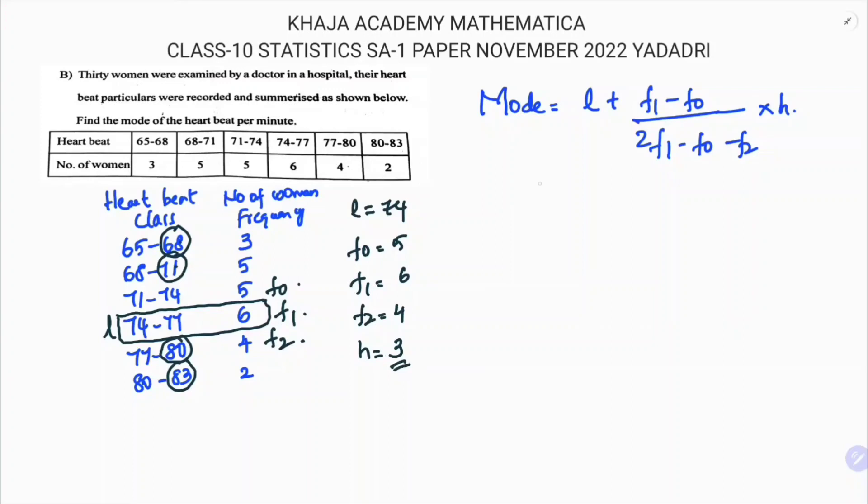Substitute all the values now. l value is 74 plus f1 which is 6 minus f0 which is 5, by 2 times 6 minus f0 which is 5 minus f2 which is 4, times h which is 3. So 74 plus (6 minus 5 is 1) by (2 into 6 is 12 minus 5 minus 4 which is 9) into 3.